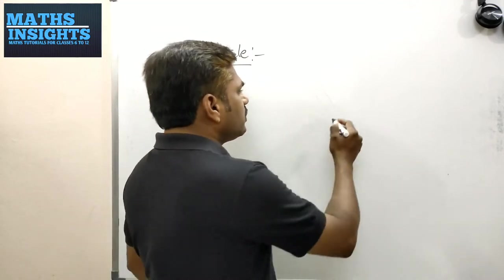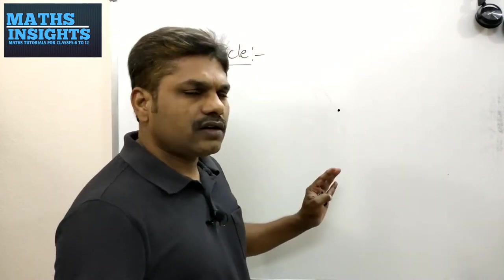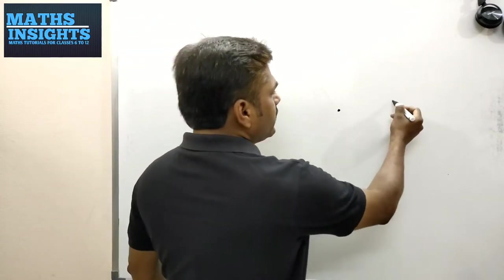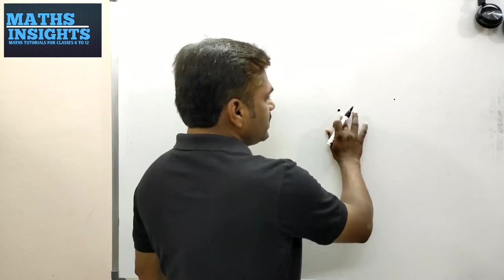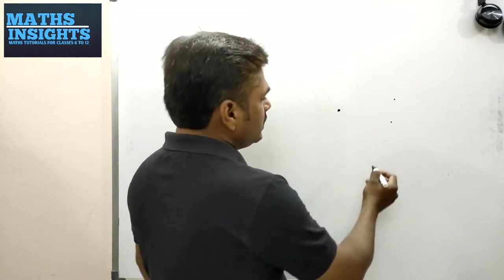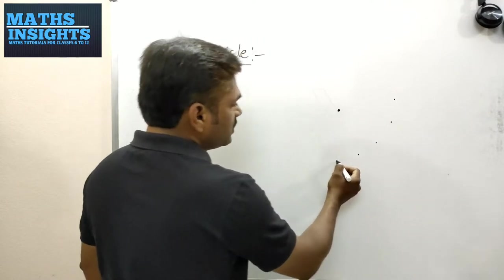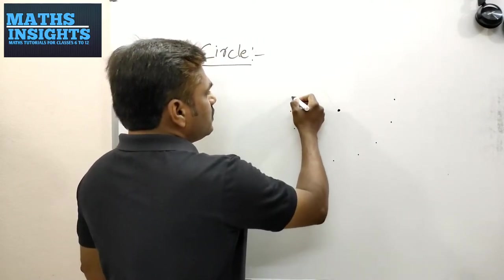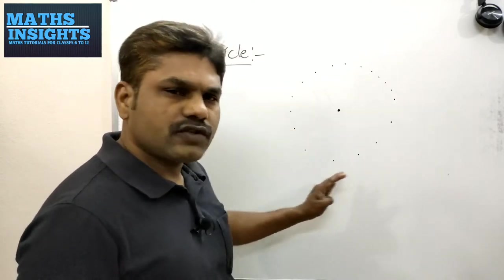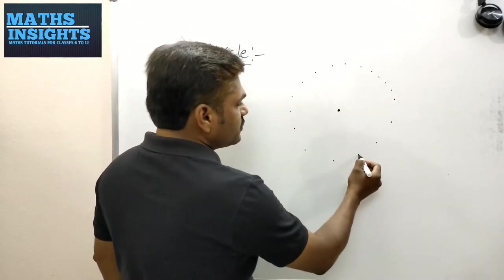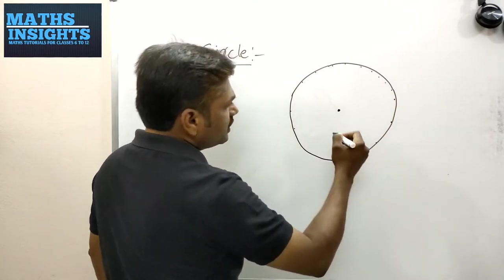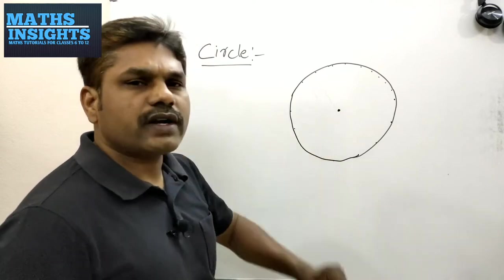If you take a board, this is a fixed point. If you take points which are equally away — that means equidistant from this point — say I am taking a point here which is two centimetres away. If you measure, you will find two centimetres. Taking another point with the same length, and more than three such points all equally away from this fixed point, and if you join all these points, you will get a geometrical figure called a circle. This fixed point is called the centre.